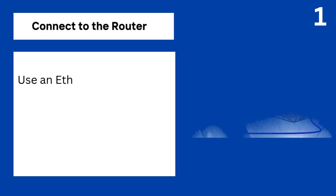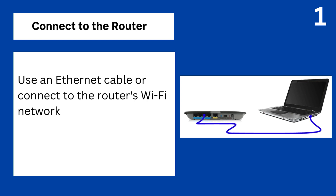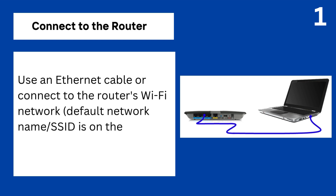Step 1: Connect to the router. Use an Ethernet cable or connect to the router's Wi-Fi network. The default network name (SSID) is on the router label.